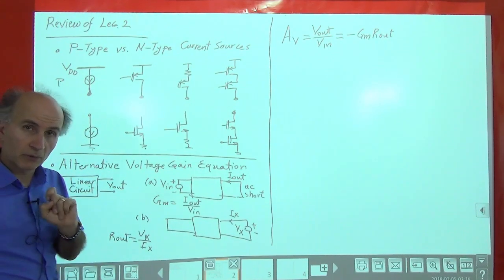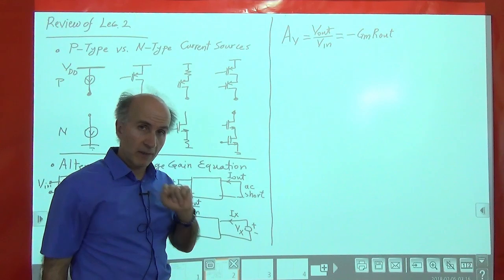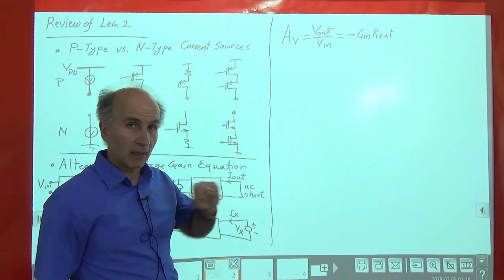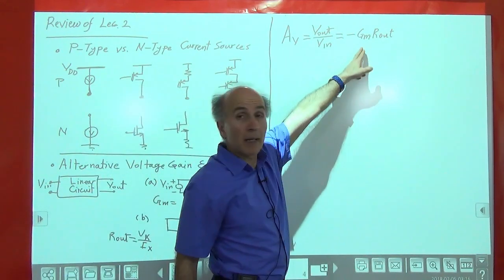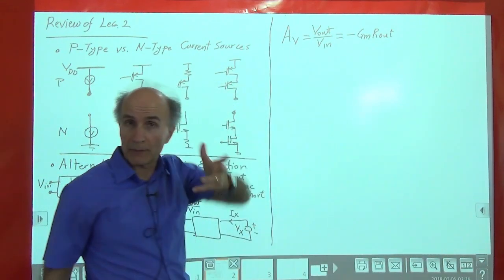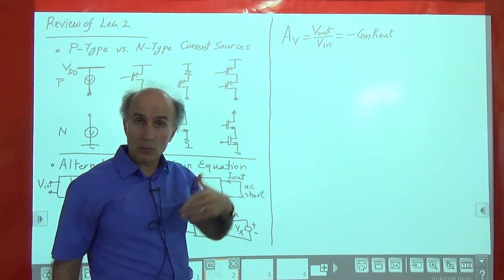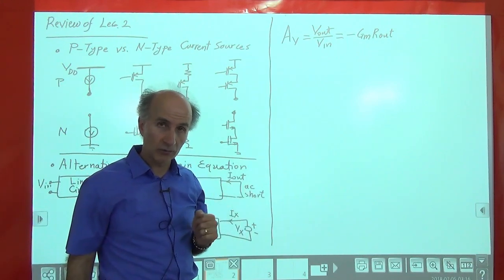We write the voltage gain of the circuit as minus GM — the transconductance — times the output resistance R_out. The important conclusion is that to maximize voltage gain, we can try to maximize GM or R_out, and we'll see in practice which one is possible and how.